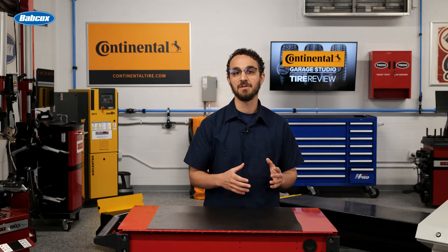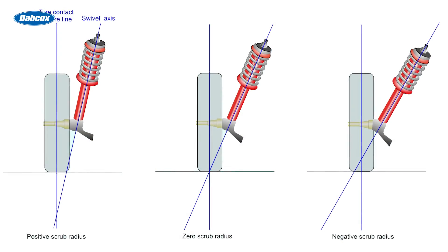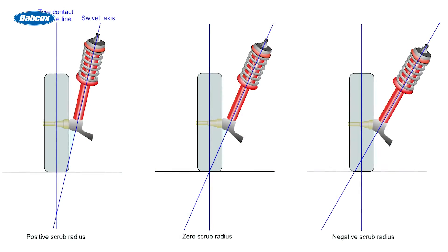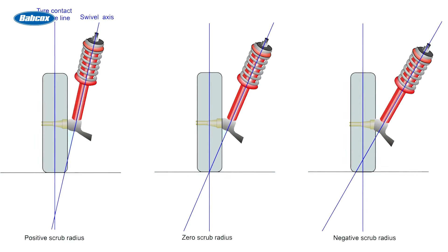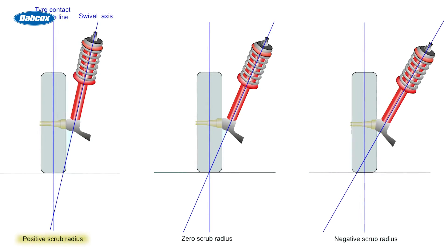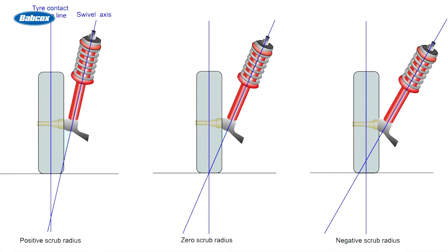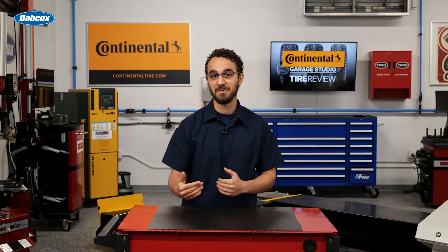The other unseen angle is the scrub radius. The scrub radius is the distance in front view between SAI and the center of the contact patch of the wheel, where both would theoretically touch the road. It could be positive, negative, or zero. Engineers will optimize SAI and the scrub radius to improve steering feel, braking stability, and even torque steer.